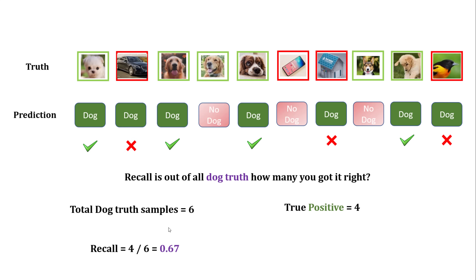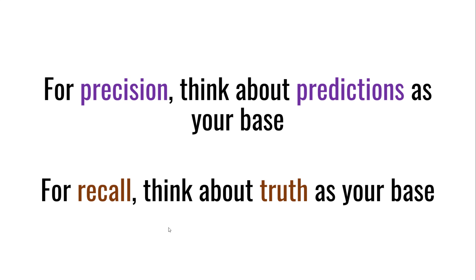So recall is: out of all your dog truth samples, how many did you get right? You had six total dog samples and got four right, hence four divided by six — 0.67 — is your recall. So the subtle difference is: for precision, predictions are the baseline; for recall, truth is the baseline.